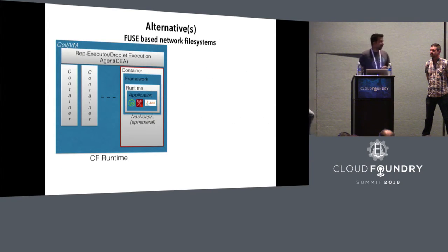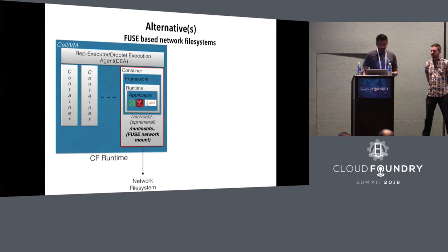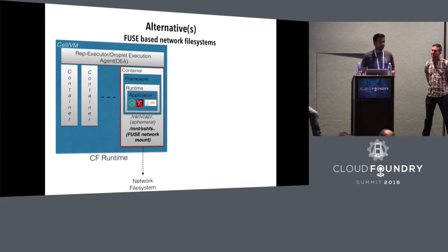There is, however, one alternative to overcome these limitations — using Fuse-enabled file systems. What you do in this case is use user-space file systems like SSHFS and actually mount remote file systems into the container directly. By doing this, you can access external remote storage in file system form, and your applications don't need to eliminate all file system dependencies, and they can be readily ported to Cloud Foundry. But this comes with a bunch of challenges.